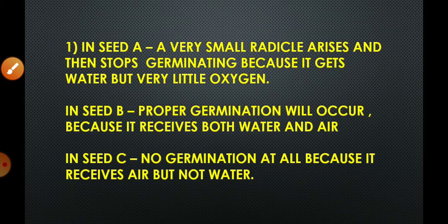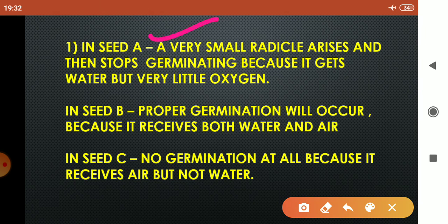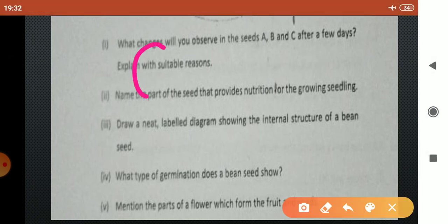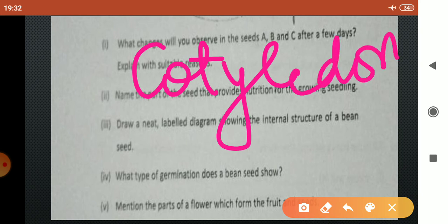So the answers are: in seed A a very small radical arises and then stops germinating because it gets water but very little oxygen. In seed B proper germination will occur because it receives both water and air. In seed C no germination at all because it receives air but not water. The next question is name the part of the seed that provides nutrition for the growing seedling. Cotyledon stores the food material.